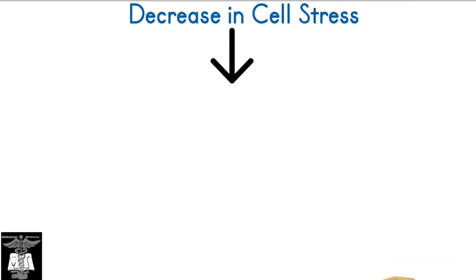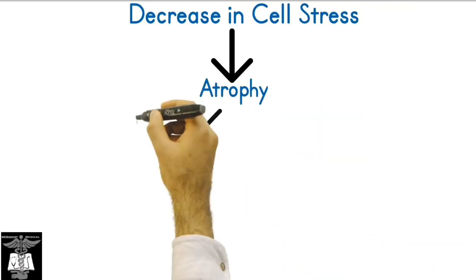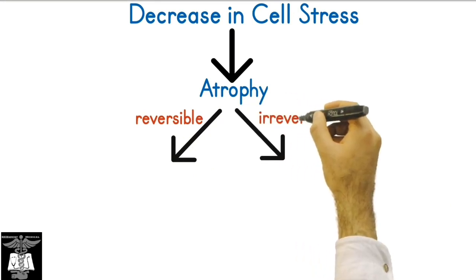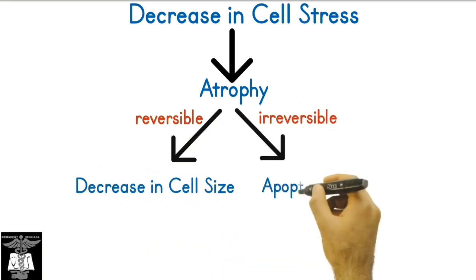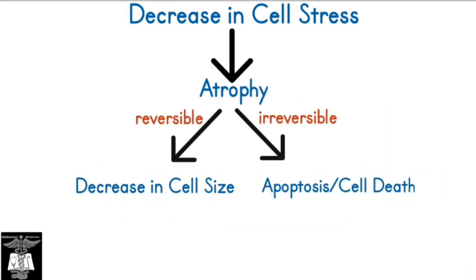A decrease in cell stress leads to atrophy, which can be reversible, or irreversible apoptosis. Given the situation, you actually want cell death because you don't need those extra cells. Providing cells with nutrients and energy is an unnecessary expenditure if you no longer need them because there's been a decrease in cell stress.